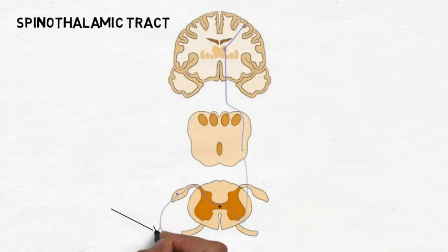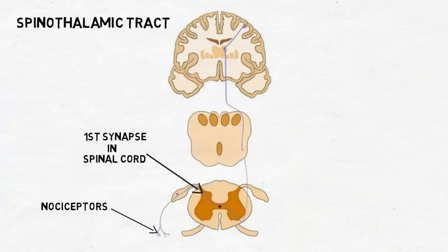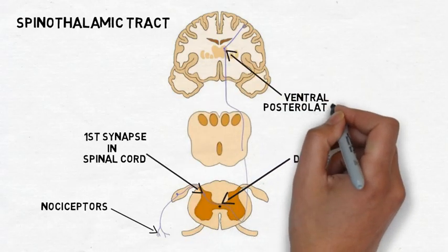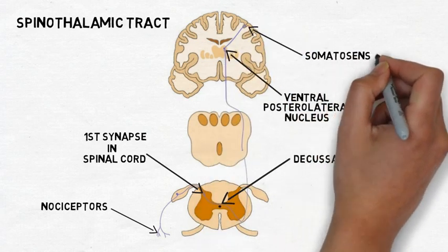Neurons in the spinothalamic tract carry pain information from nociceptors to the spinal cord, then immediately synapse with a second neuron that quickly decussates, or crosses over to the other side of the spinal cord before traveling up the spinal cord. These fibers proceed to the ventral posterior lateral nucleus of the thalamus, where they synapse with another neuron that carries the pain information to the somatosensory cortex.